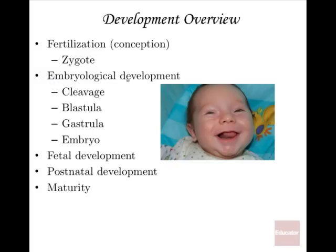From that point on, it's embryological development until it becomes a fetus. The first step in getting from zygote to embryo is cleavage — that's the term for when cells physically divide the cytoplasm and separate. Cleavage happens after telophase and occurs over and over again. You form a ball of cells, and that ball with a hollow center is called a blastula.